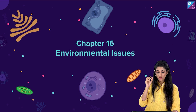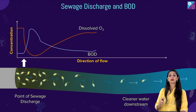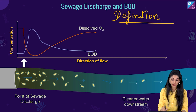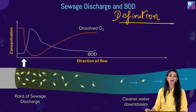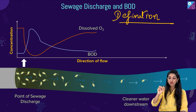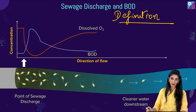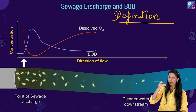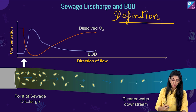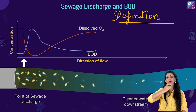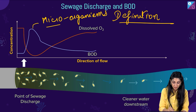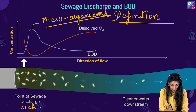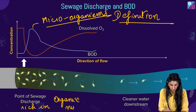In Environmental Issues, an extremely important topic is Biological Oxygen Demand (BOD). From the definition alone, questions can come. BOD measures how polluted a water body is. When sewage (CH — domestic wastewater) is discharged into a water body rich in organic nutrients like vegetable matter and human excreta, it is party time for microorganisms who immediately begin decomposition.